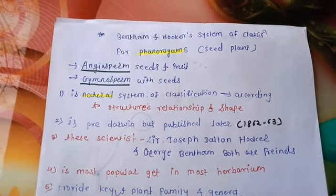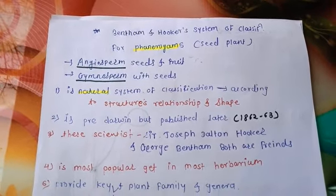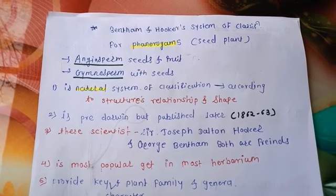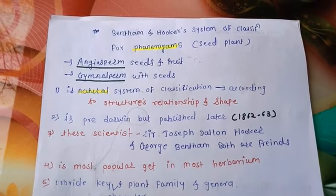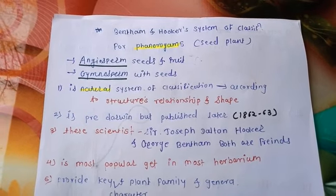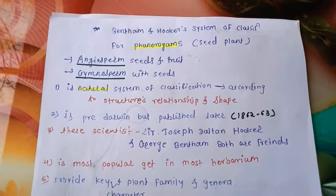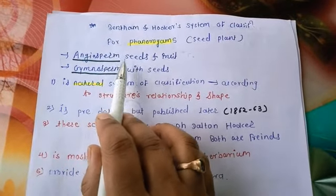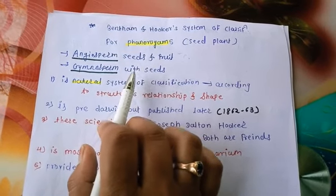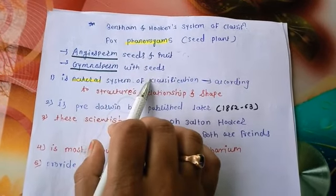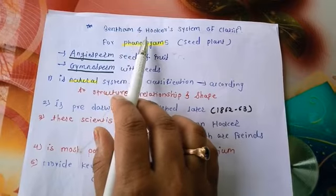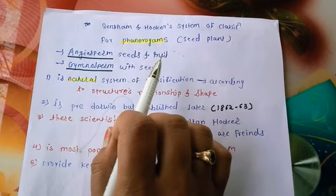Welcome friends, this is Sapna Dhakri and this is my second video on YouTube. We will look at the Bentham and Hooker system of classification for Phanerogams. Phanerogams means seed plants. There are two types of Phanerogams: angiosperms and gymnosperms. Angiosperms means seeds with fruit, and gymnosperms means naked seeds.